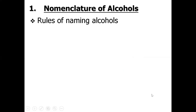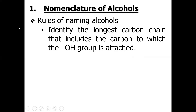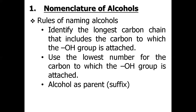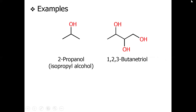Let's see the rules for naming alcohols. Similar to alkane nomenclature, find the longest chain that includes the carbon to which the OH group is directly attached, and give the lowest number to that carbon. Use the suffix '-ol' — replacing the terminal 'e' of the alkane name with 'ol'. For example, a three-carbon chain with OH at carbon two is propan-2-ol (common name: isopropyl alcohol). A chain with three hydroxyl groups would be named 1,2,3-butanetriol.